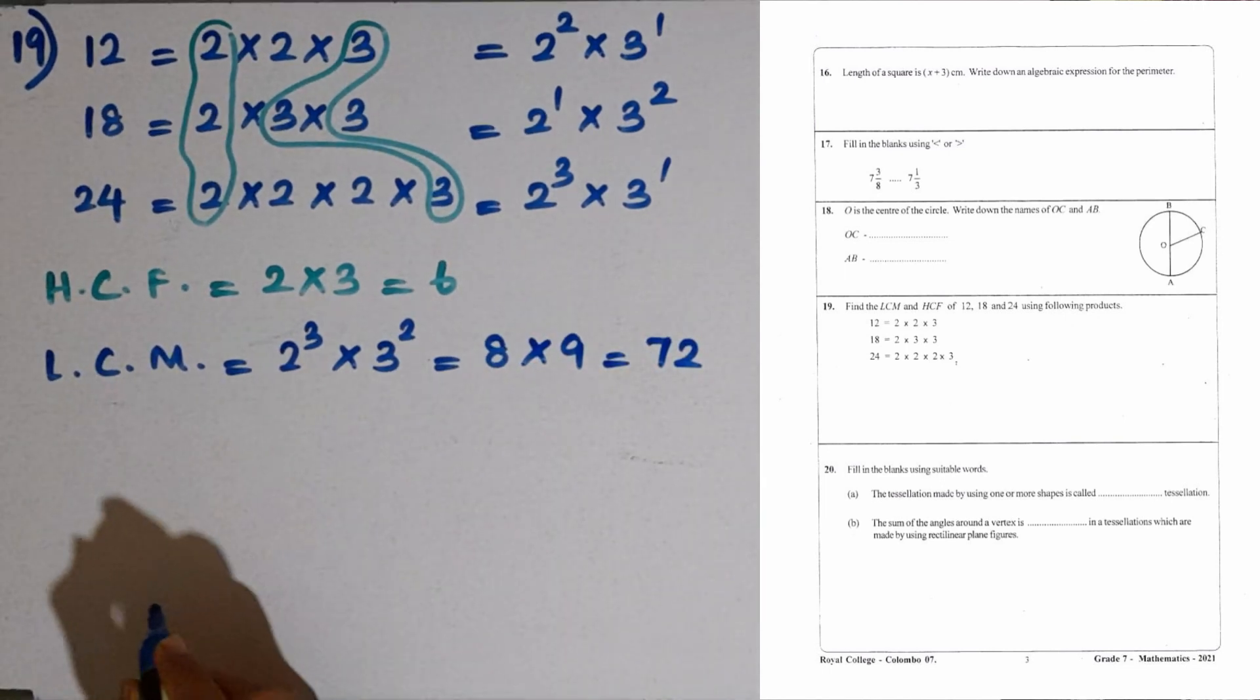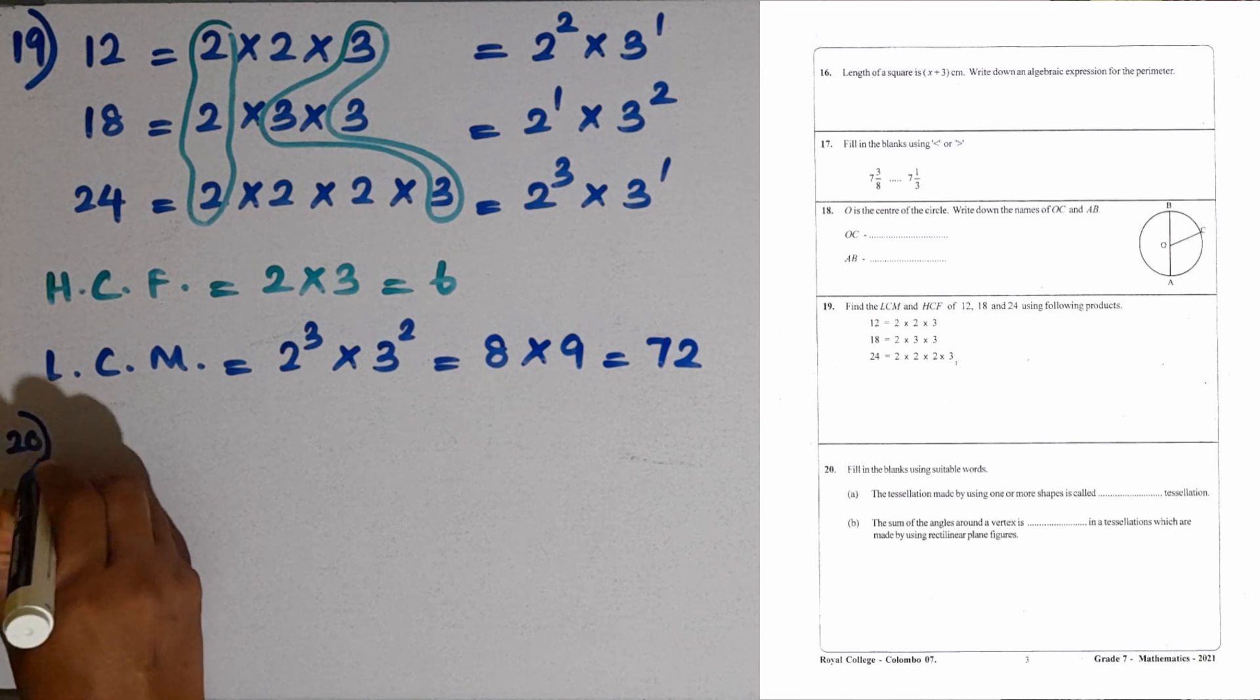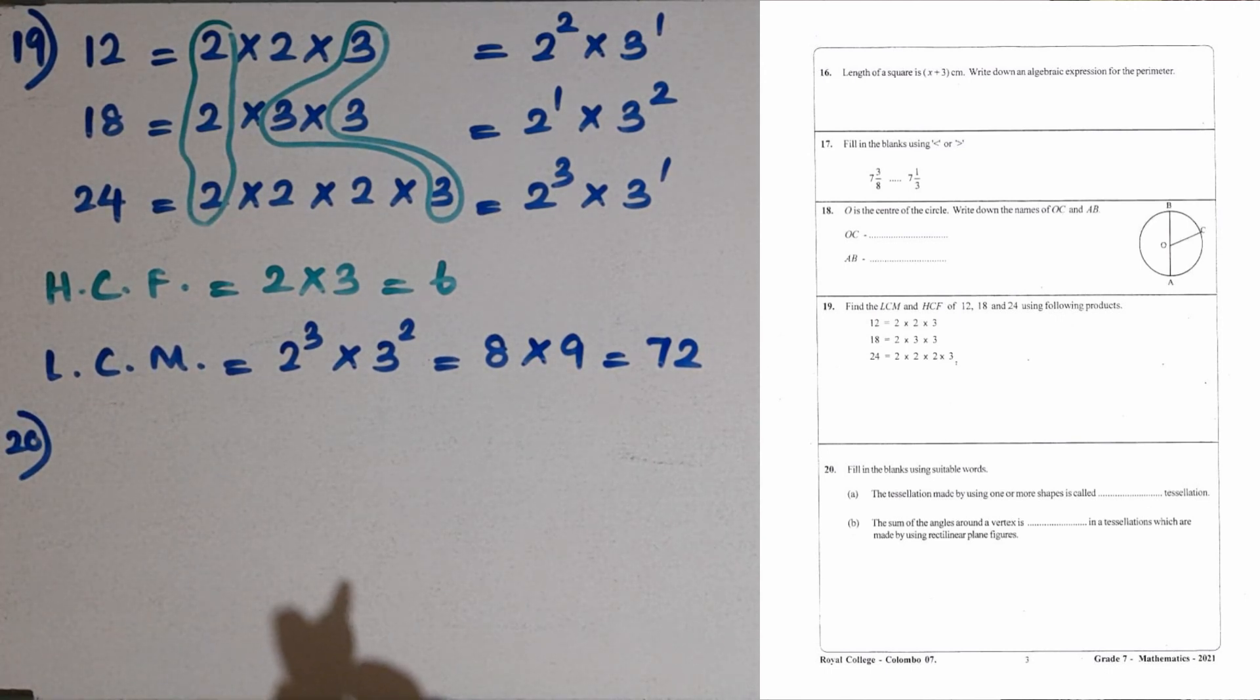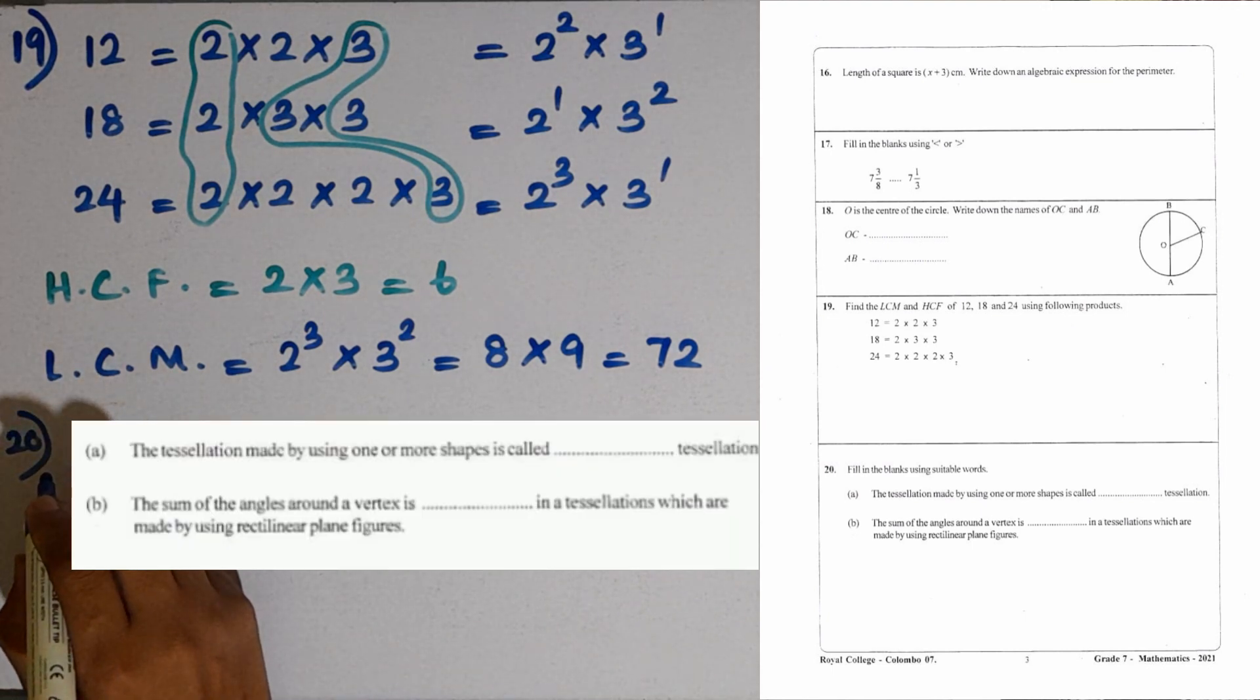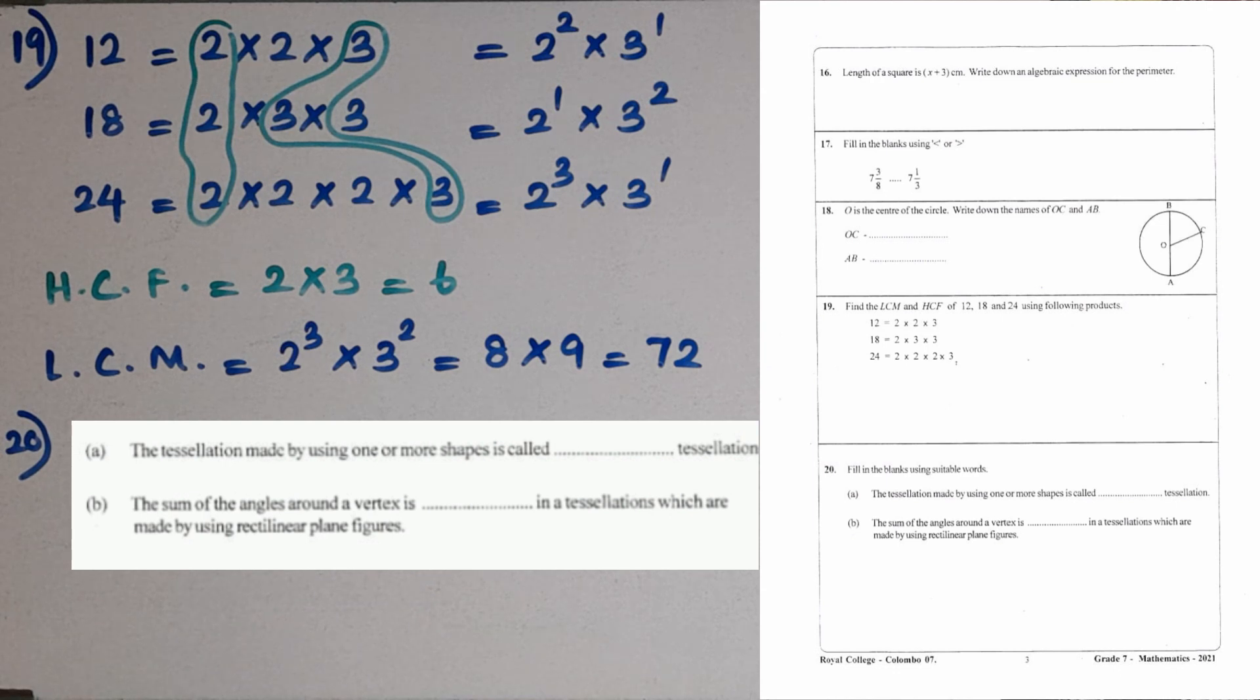Last question, question number 20. Fill in the blanks using suitable words. We are given these two. Part A: The tessellation made using one or more shapes is called semi-pure tessellation. In the pure tessellation, only one shape is used. So if we use one or more shapes, it is a semi-pure tessellation. Then part B: The sum of the angles around the vertex is 360 degrees in a tessellation which are made by using rectilinear plane figures. The answer is 360 degrees.